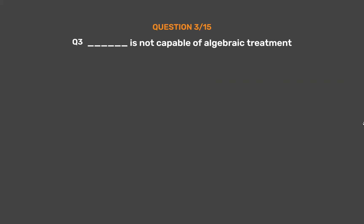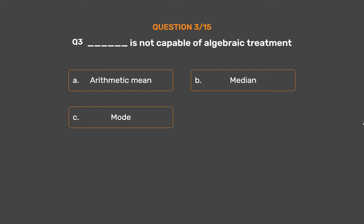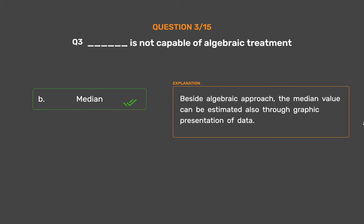Question number 3. Which measure is not capable of algebraic treatment? Option A: Arithmetic mean. Option B: Median. Option C: Mode. Option D: None. The correct answer is Option B: Median. Besides the algebraic approach, the median value can be estimated also through graphic presentation of data.